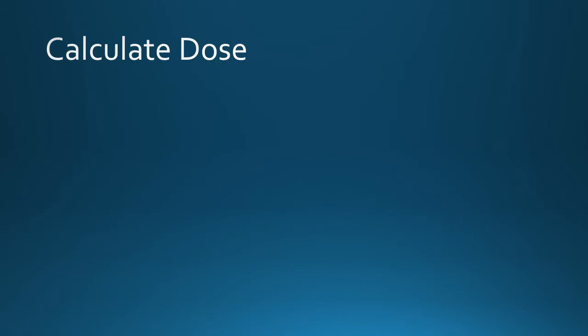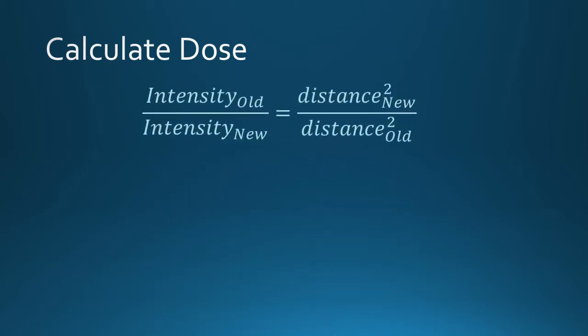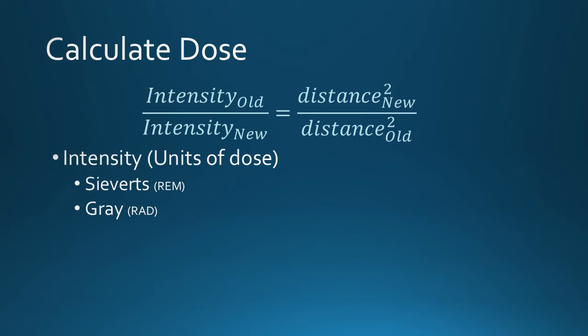The inverse square law involves two similar equations: one that compensates MAS for distance change, and one that calculates dose as it relates to distance. The basic dose equation states that intensity old over intensity new equals the distance new squared over the distance old squared. Radiation intensity will generally be expressed in units of radiation dose, typically sieverts or gray — reasonable substitutes for intensity units not normally used in our profession.